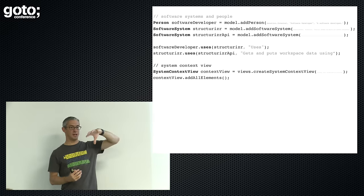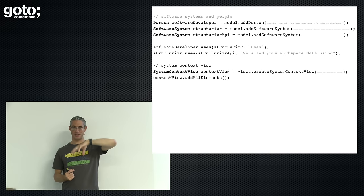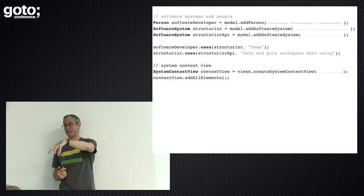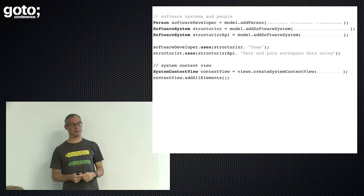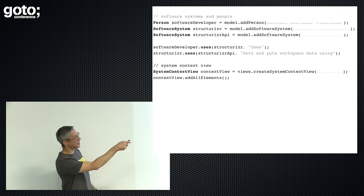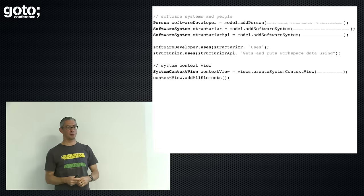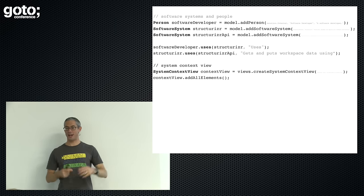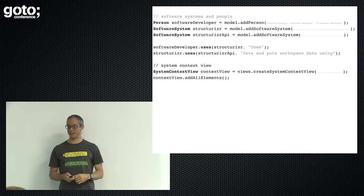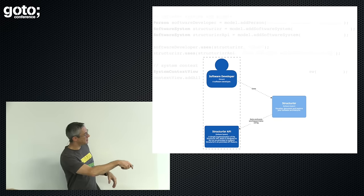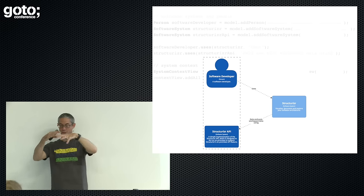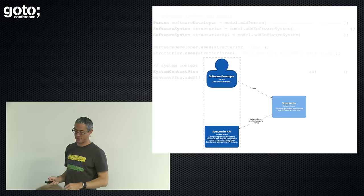Let's have a go at using this for describing my little API thing. As a user — a software developer — they are using my Structurizer product, and Structurizer uses the API to store information locally. We can just write up some code to create that little model, then create a system context view by adding the appropriate things to the diagram. The net result is very simply: you get a picture from code. It's a very simple way to describe the high-level structures of a software system.